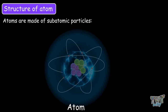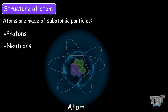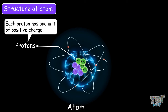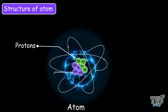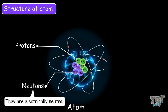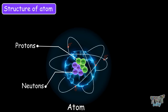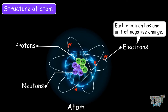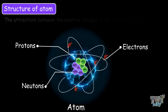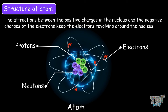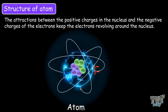Atoms are made up of subatomic particles, which are protons, neutrons, and electrons. Each proton has one unit of positive charge, neutrons are electrically neutral, and each electron has one unit of negative charge. The attractions between the positive charges in the nucleus and the negative charges of the electrons keep the electrons revolving around the nucleus.